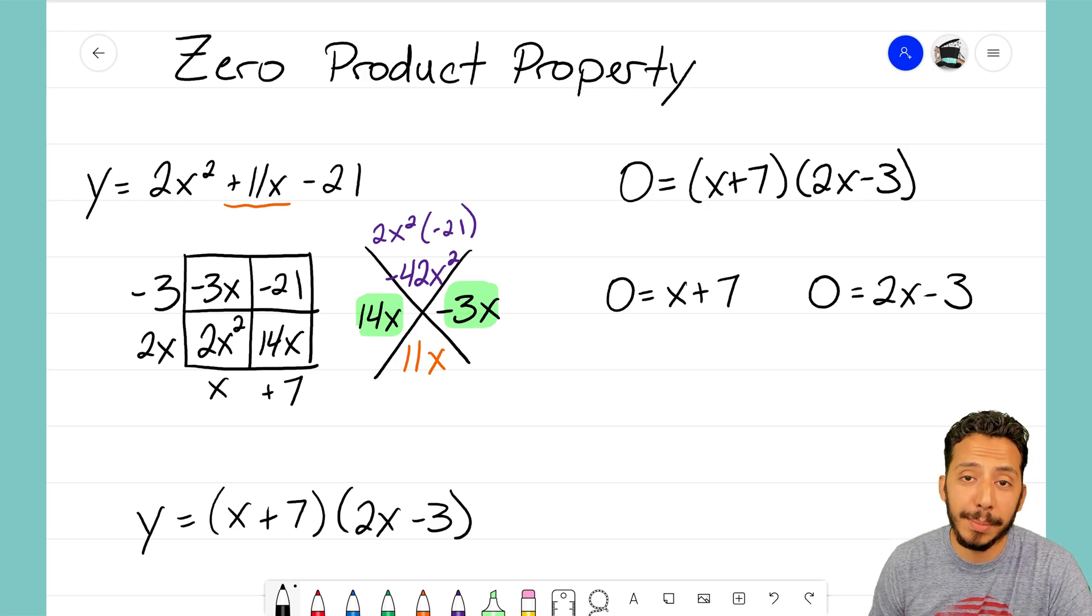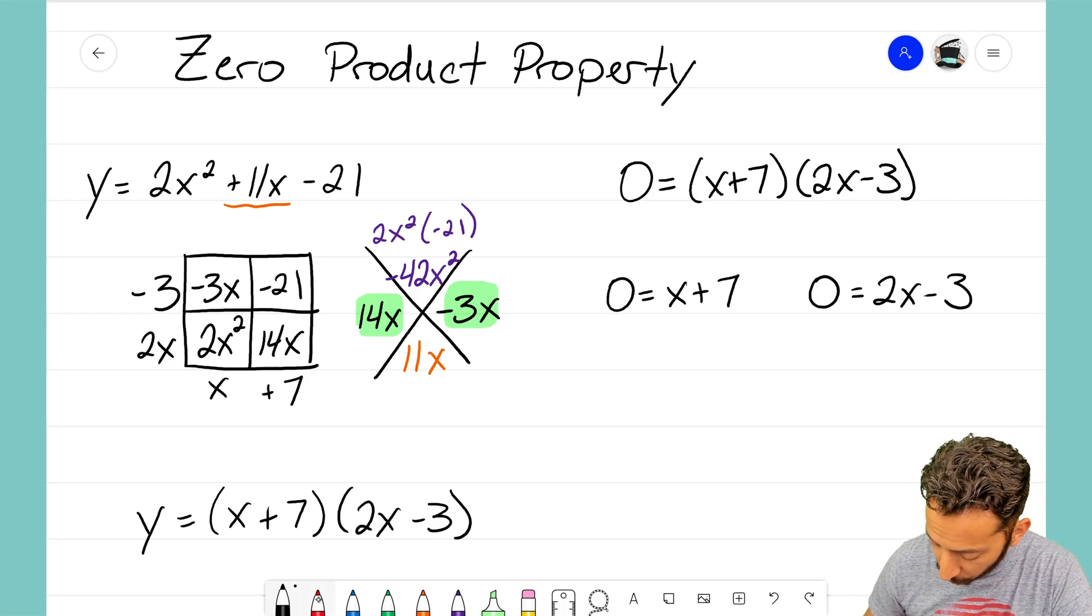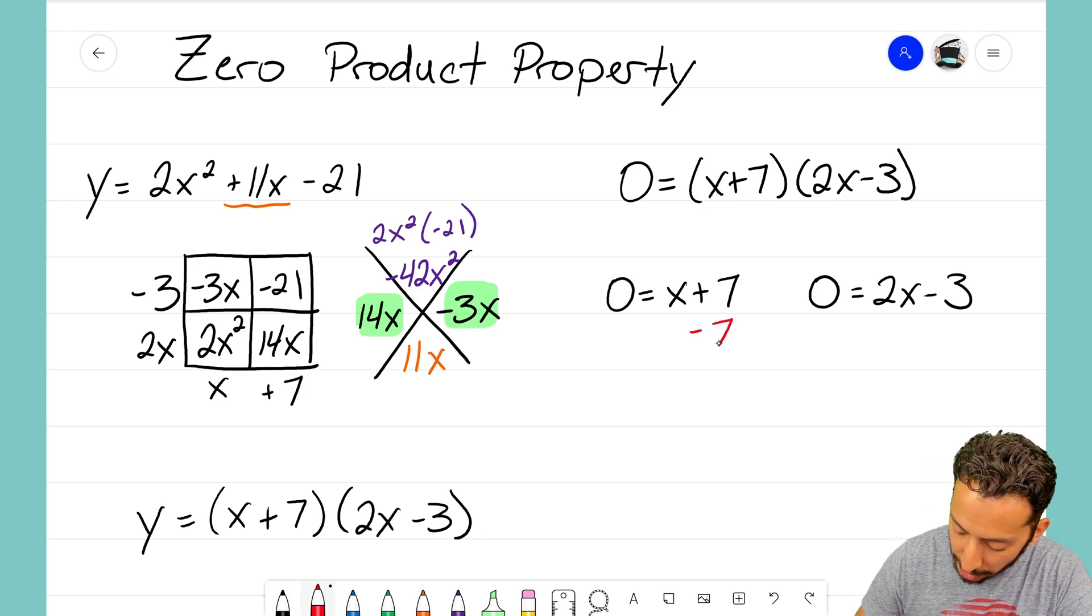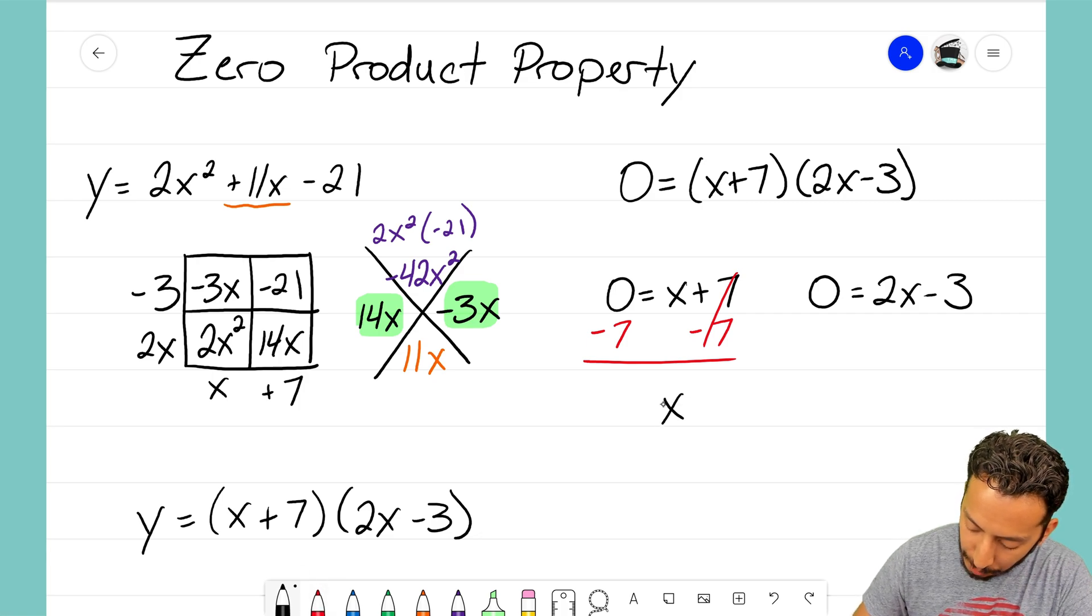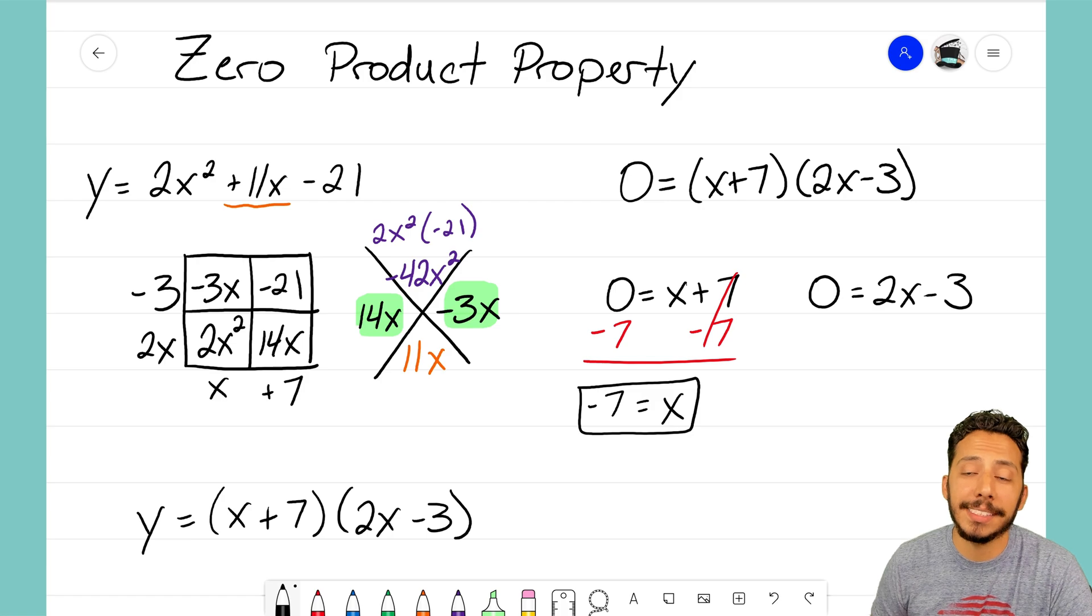Now I'll go ahead and solve the one on the left. That won't require too much work. Just subtracting seven on both sides, I end up with x equaling negative seven, my first x-intercept.